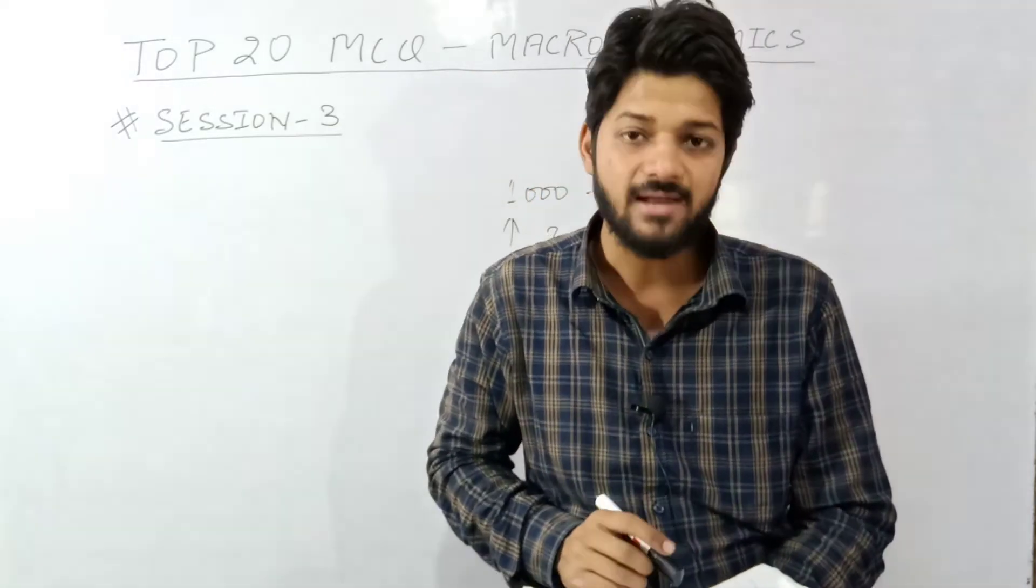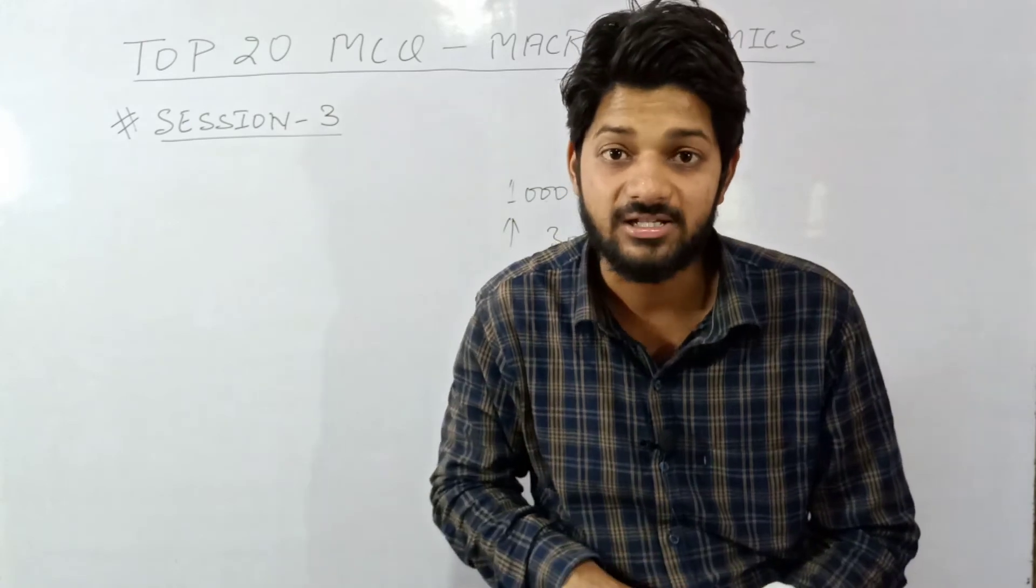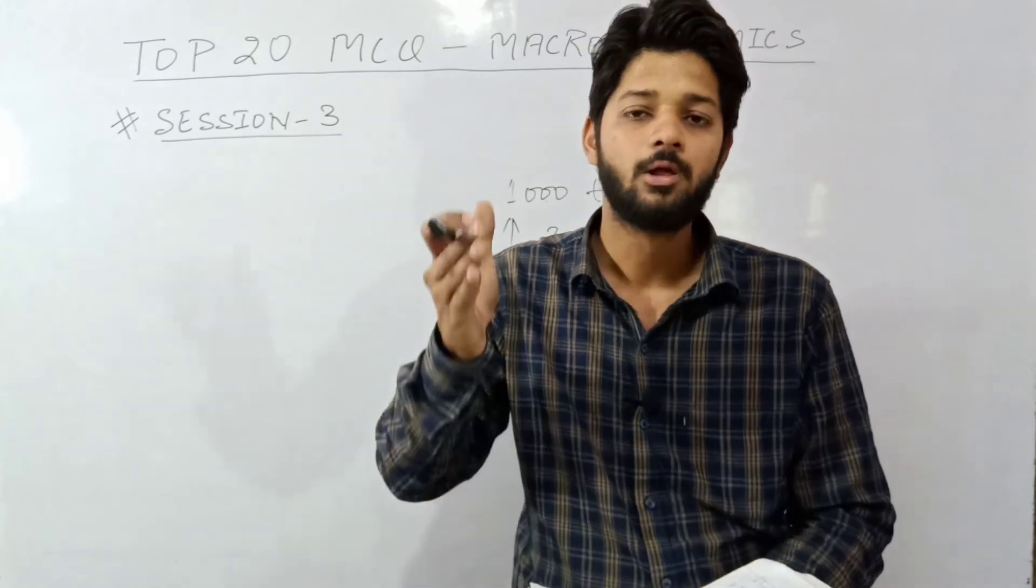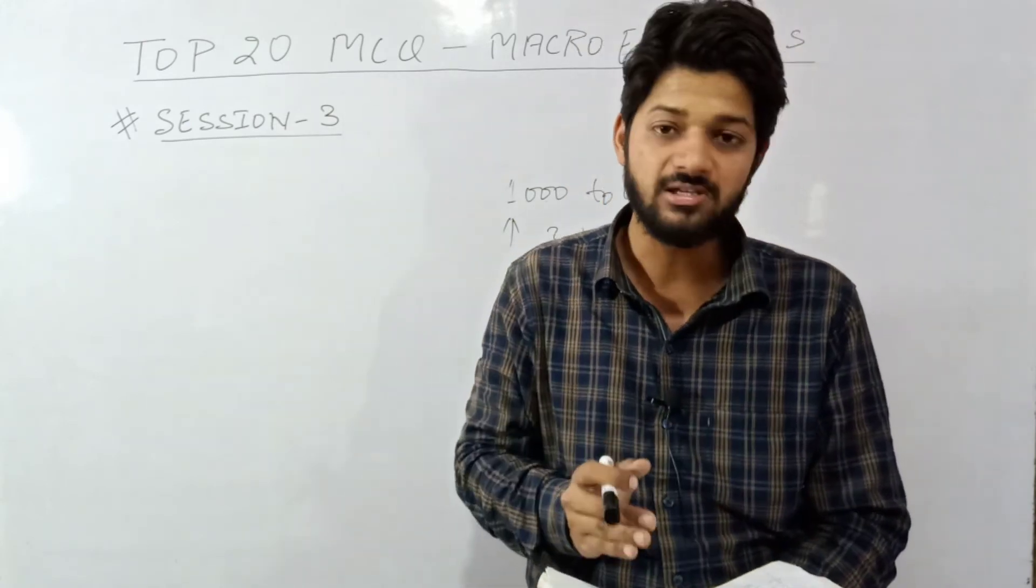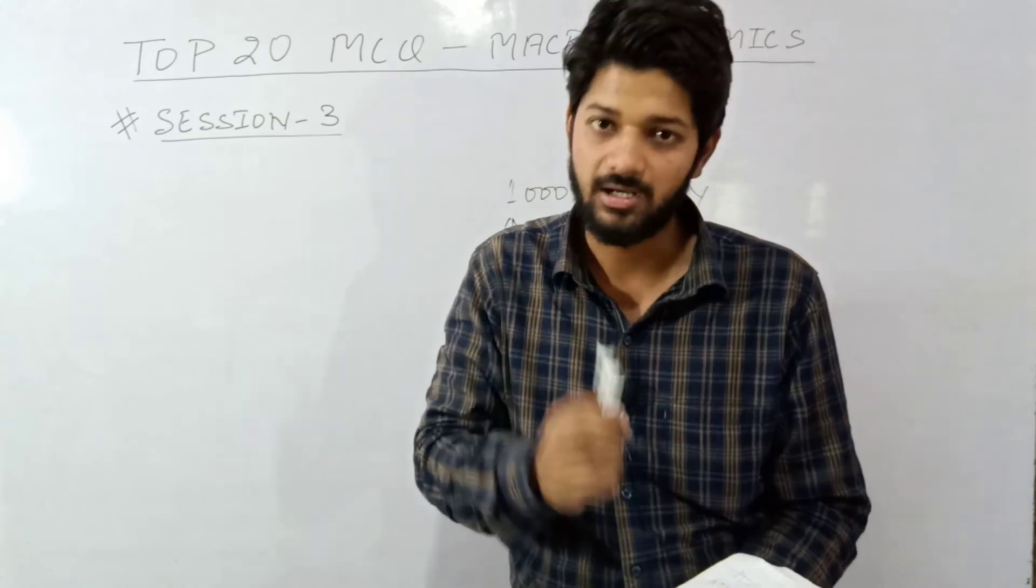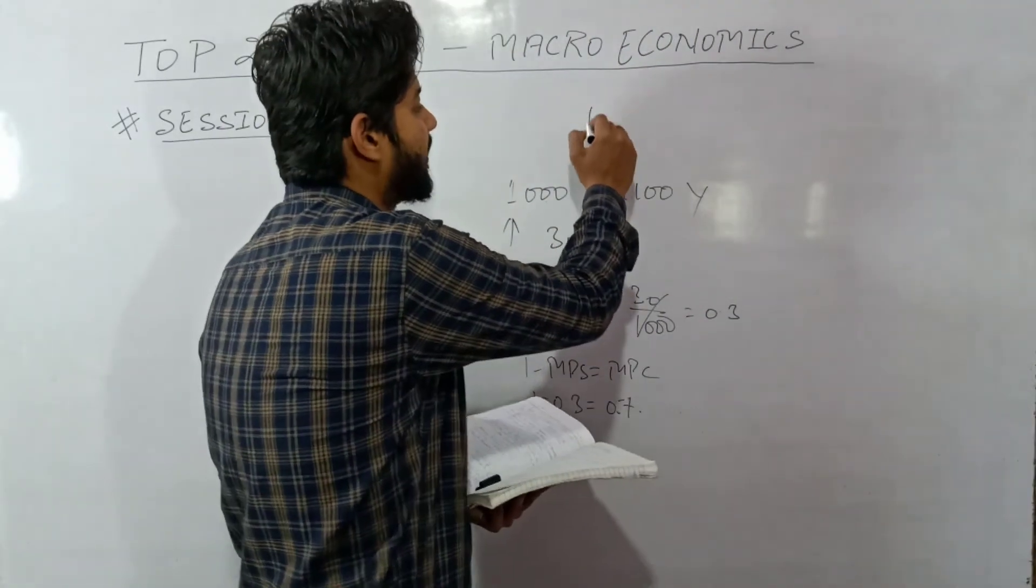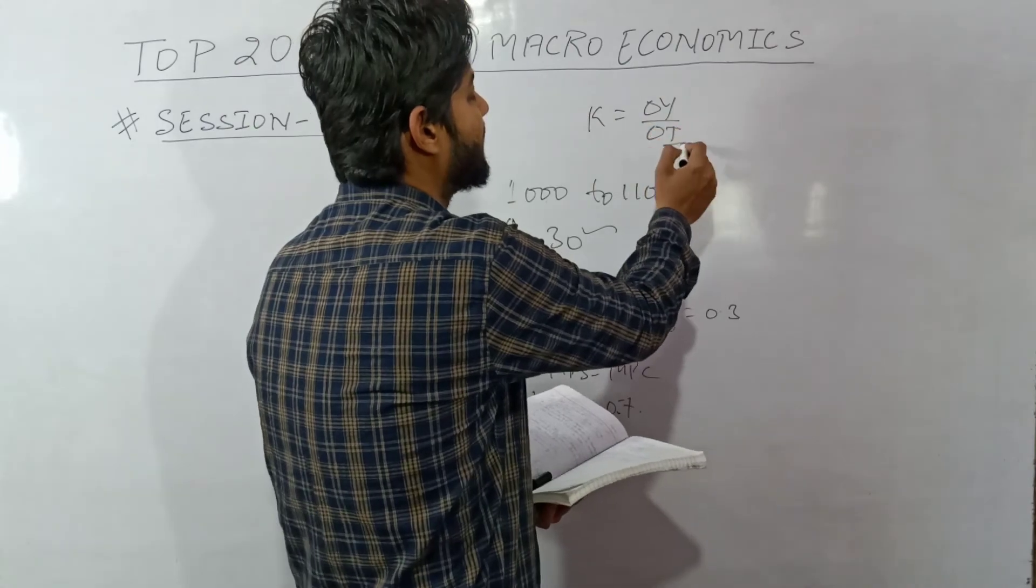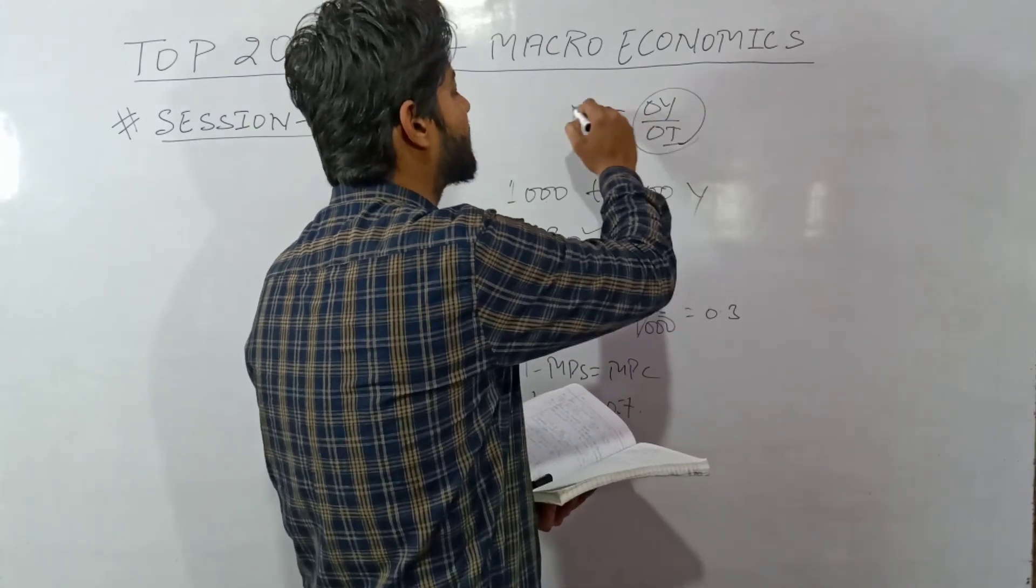Question number twenty: multiplier is the ratio. Multiplier is the ratio of change in income to change in investment. We know that K's formula is change in Y upon change in I. That means multiplier theory determines the relationship between I and Y.